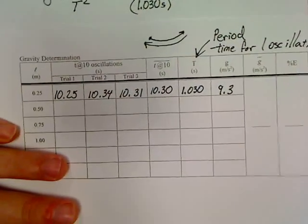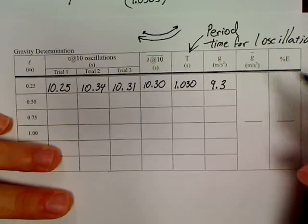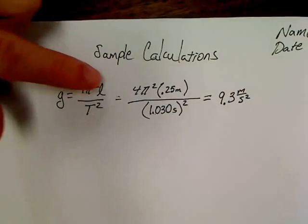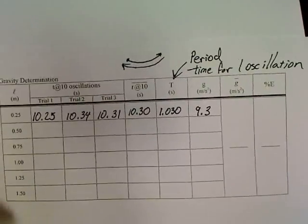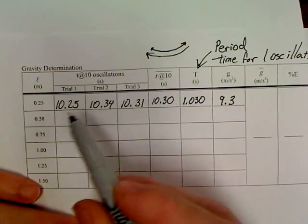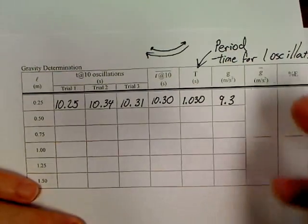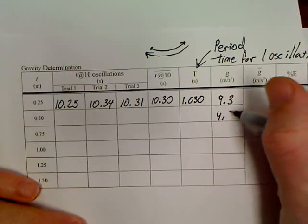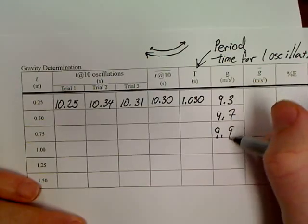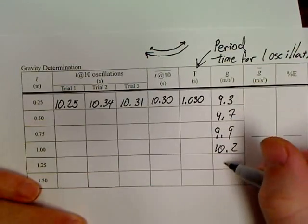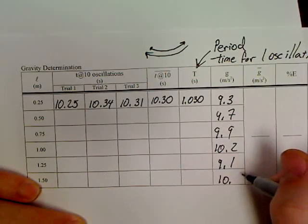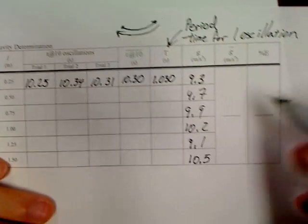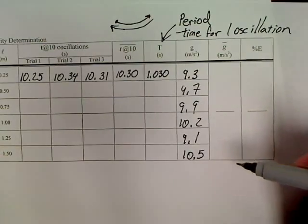Now, you're going to do these same calculations all the way down the table. You don't have to show them. This is called sample calculations. So this page is going to have nothing but that for now. So you can run through your calculator, changing the length, using your times, and you should end up 9.7, 9.9, 10.2, 9.1. Let's say this one was a really bad one. You got 10.5 on it. You should end up with 6 Gs.